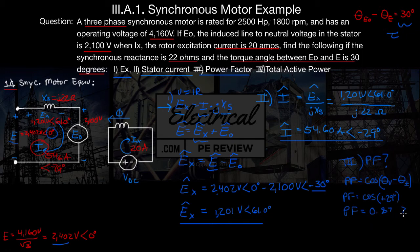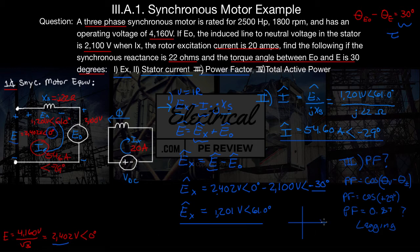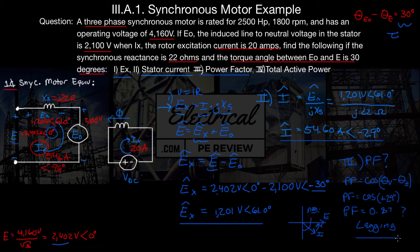Now, is this lagging or leading? This is going to be lagging. If we draw our phasor diagram, supply voltage E is at 2,402 volts at zero degrees, and our current is 54.6 amps at negative 29 degrees — that puts our current below the voltage phasor. Since our current is lagging our voltage, this is, in fact, a lagging power factor.